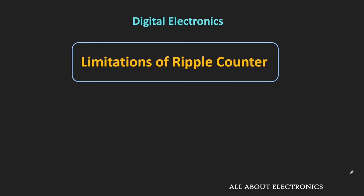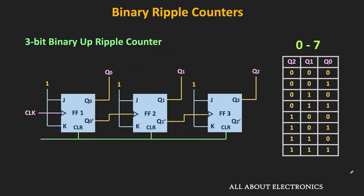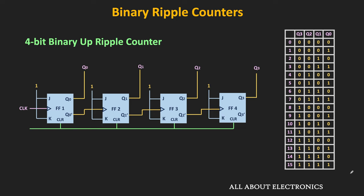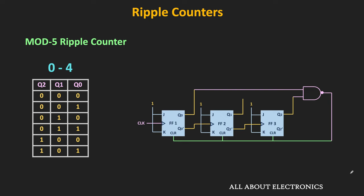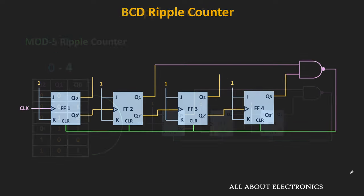Hey friends, welcome to the YouTube channel all about electronics. In this video, we will see the limitations of the ripple counter and we will see why the ripple counter is not used for very high frequency applications. In the previous two videos, we have seen the design and working of the 3-bit and 4-bit ripple counters, and how we can design the n-bit ripple counter. We also saw how to design the ripple counter of specific modulus, with the example of the mod-5 and BCD counters.